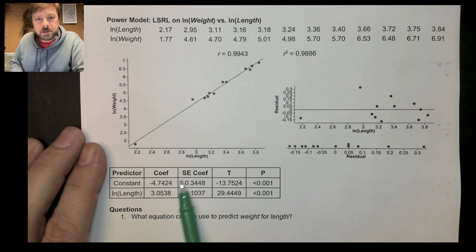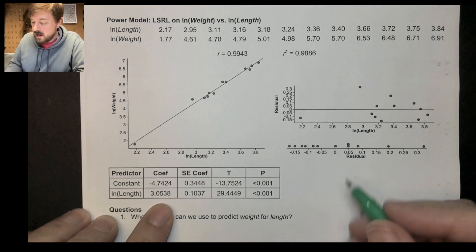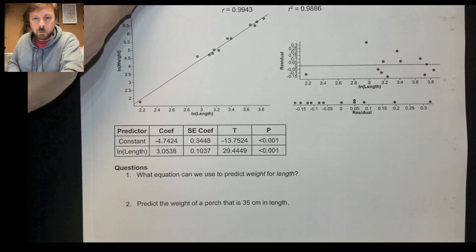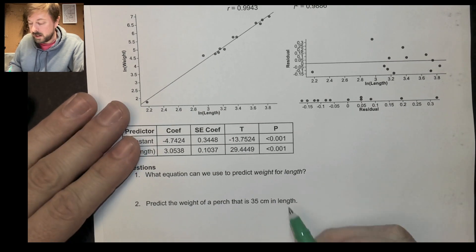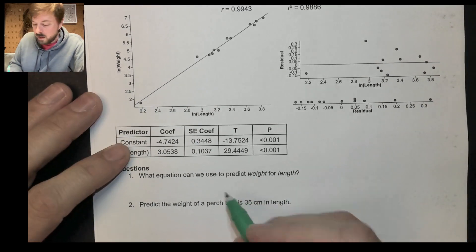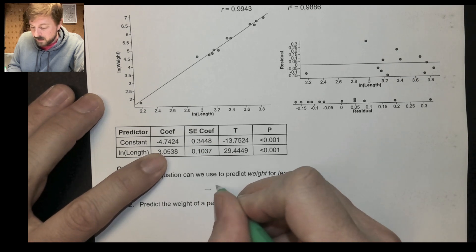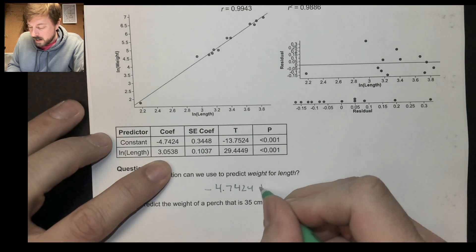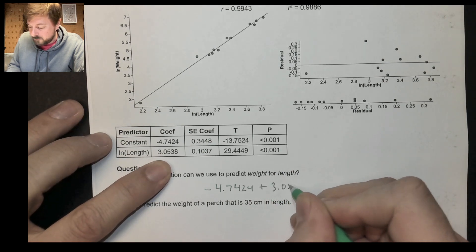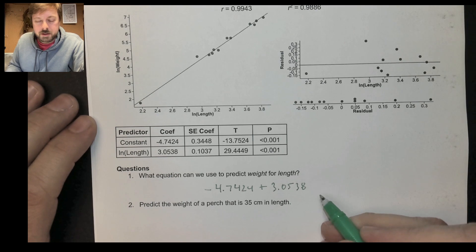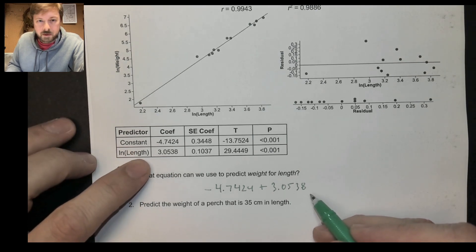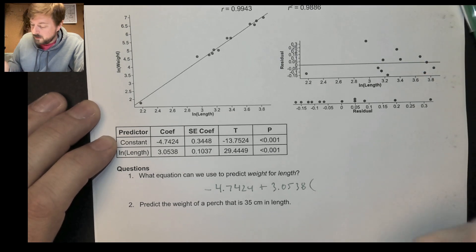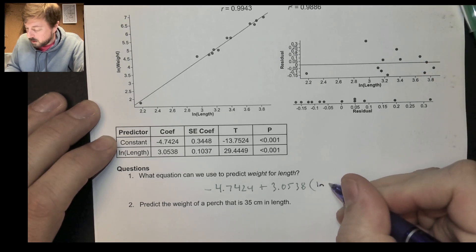So here, this is our computer output for the least squares regression line. If I was to write the equation, what equation can we use to predict the weight from length here? Well, let's take a look. We have a y-intercept of negative 4.7424, and we add to that 3.0538. Now when I would typically just write X or length is what X is here, but it's not X though. This is actually, remember, this is the natural log of length.